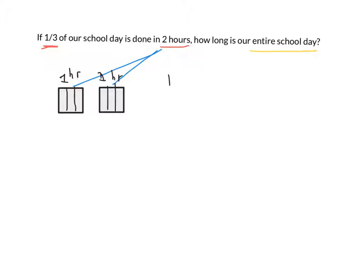We know that because it said one-third of our day is done in two hours. Okay, so one-third is equal to two hours. So if you had one-third, how much is one-third equal to? It's equal to two hours.